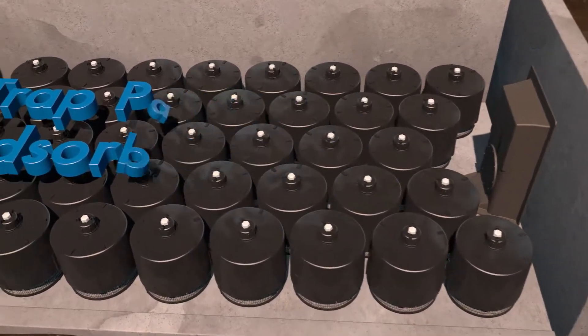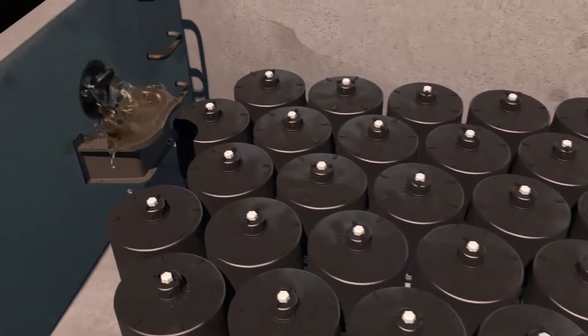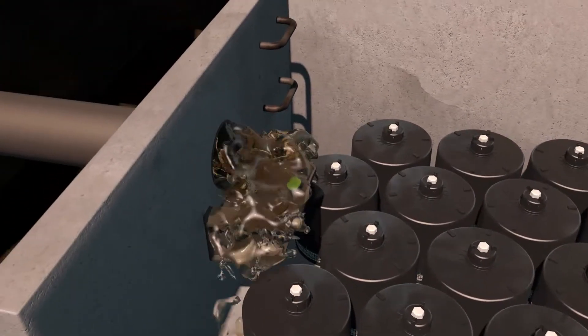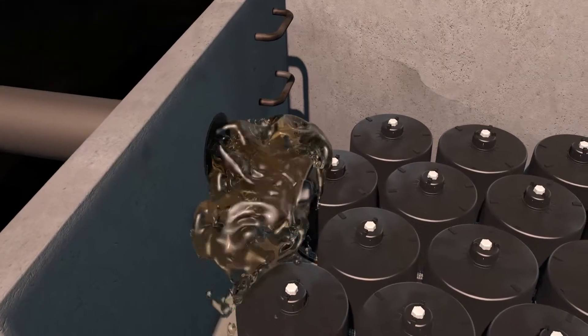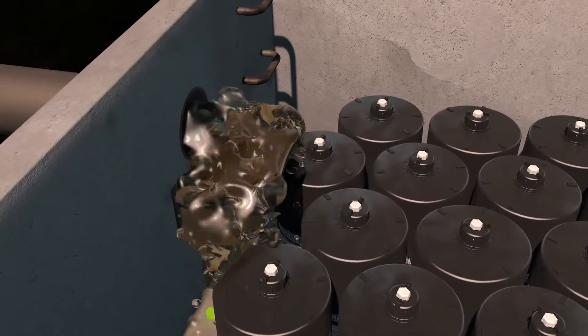During a rainfall event, stormwater enters the structure through the inlet pipe and is directed to an energy dissipator to minimize re-suspension of previously captured pollutants during the treatment process.